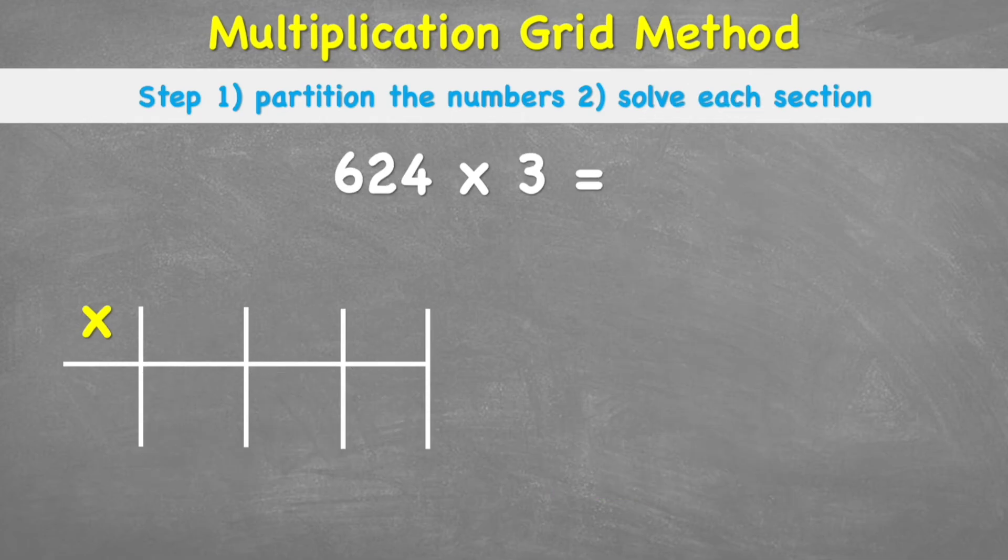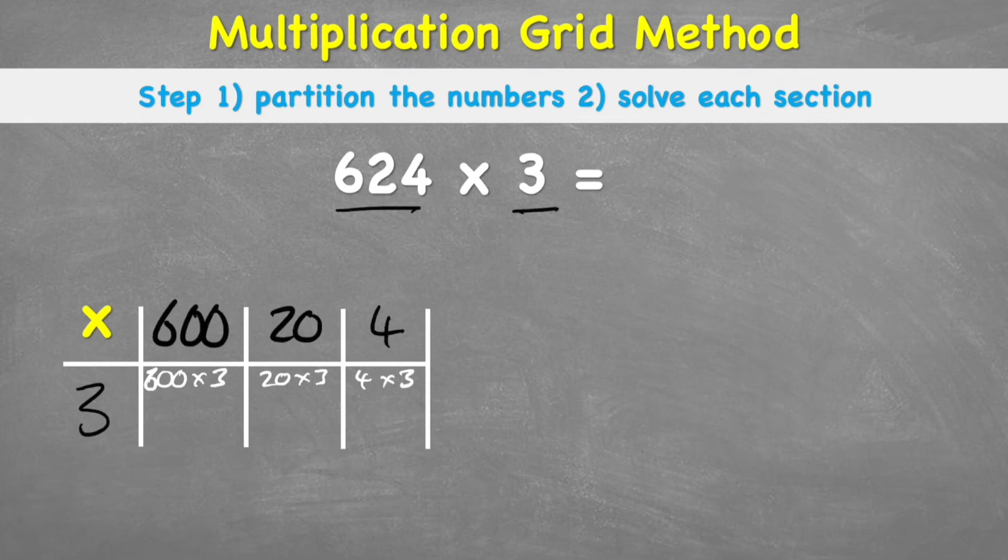Let's do another one super quick. 624 times 3. So remember, I'm going to partition my 624 into a 600, a 20, and a 4. And then 3 on the other side. Now I'm going to work out what each of the individual grid is answering. And I would have 600 times 3, 20 times 3, and 4 times 3. So question 1 says 600 times 3. 600 is made up of 2 happy numbers. So it's actually just 6 times 3, which is 18. Put back my 2 happy numbers. So my answer is 1,800. My second box is 20 times 3. And again, I can see the happy number. So I can just do 2 times 3, which is 6. But then put back my happy number, and I get an answer of 60. And then finally, my last question says 4 times 3, which I can just do as 12.